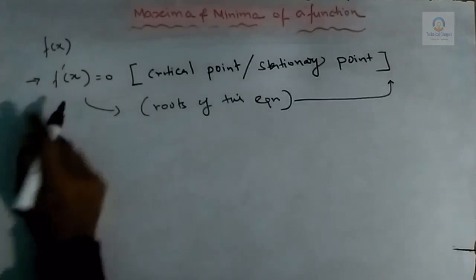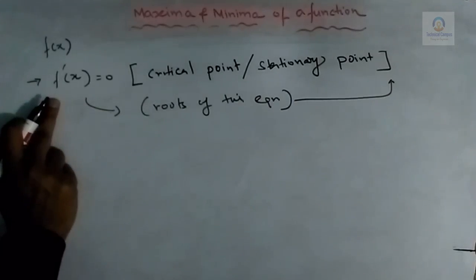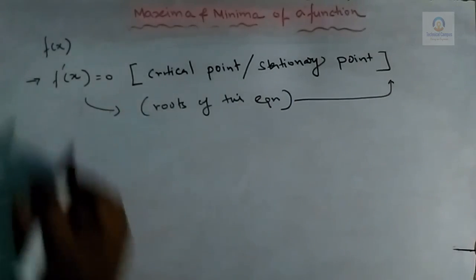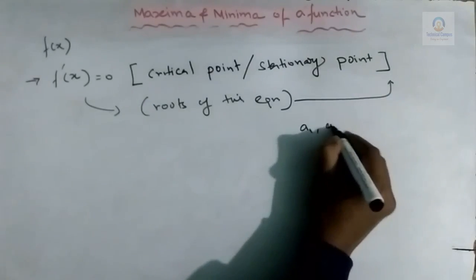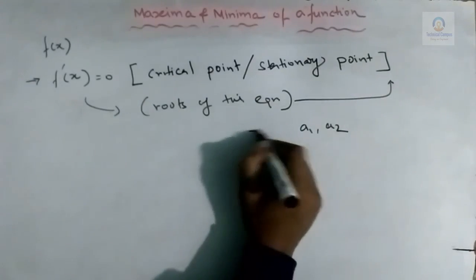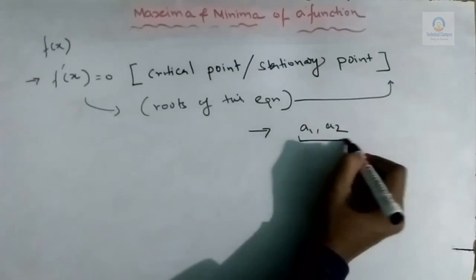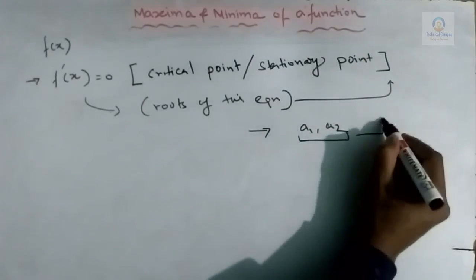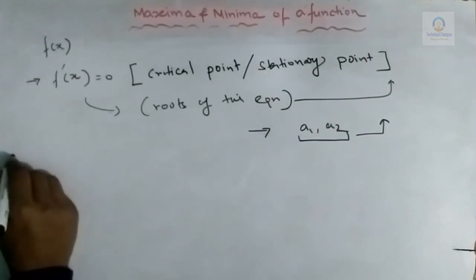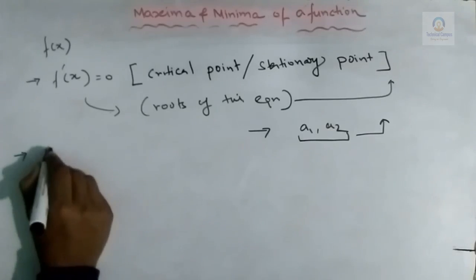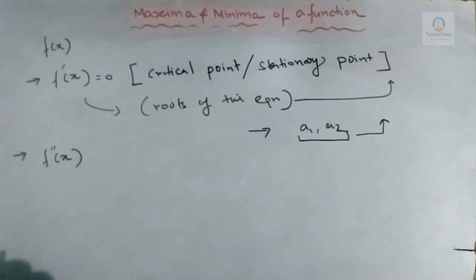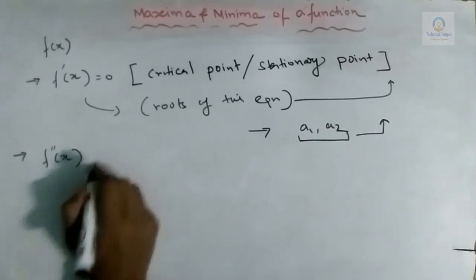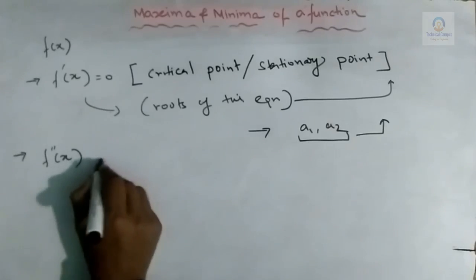Suppose the roots of this equation are a₁ and a₂. So a₁ and a₂ are the critical points. The second step is to calculate f''(x), the second differentiation of f(x), and then substitute the value of x with a₁ and a₂, the roots of the first derivative equation.